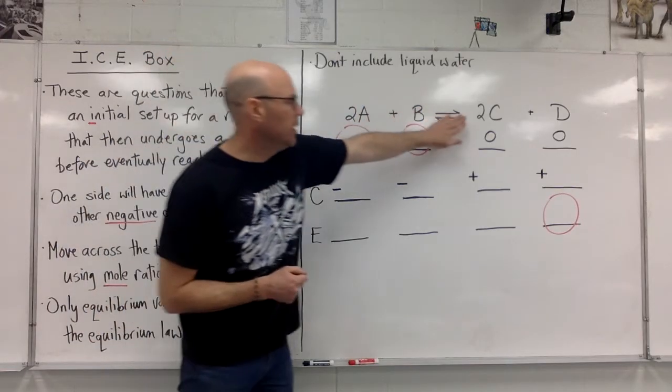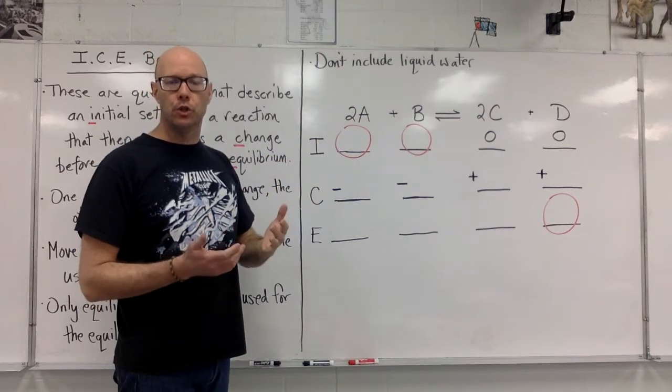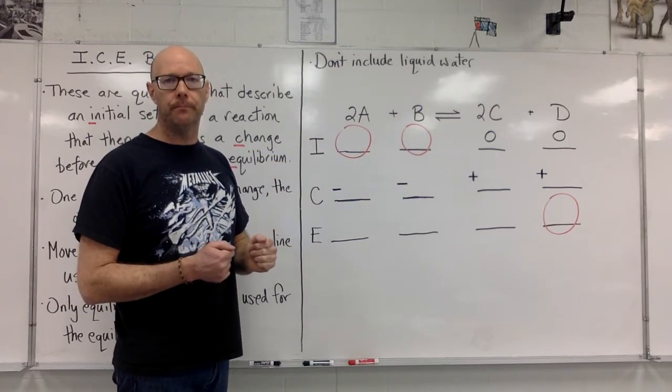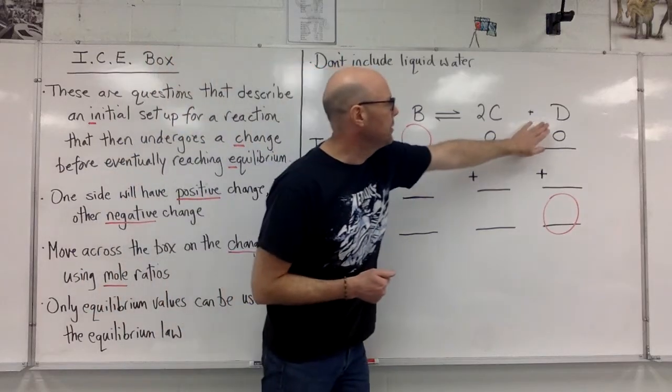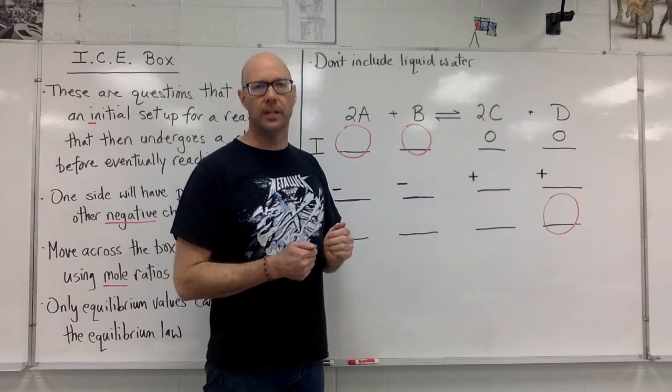A and C, on the other hand, are going to be experiencing the same change. They're in a two to two ratio, one to one. And again, D is going to be experiencing half the change of C. It's in a one to two ratio with C.